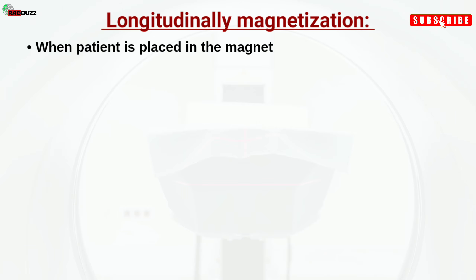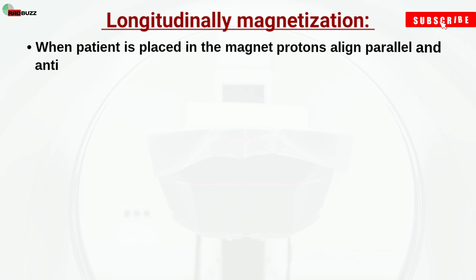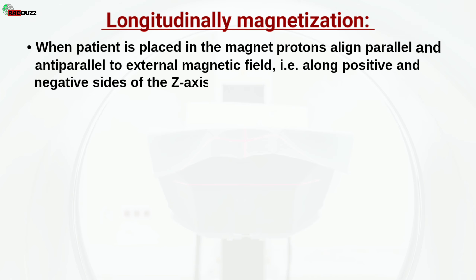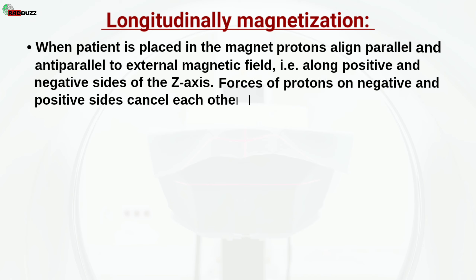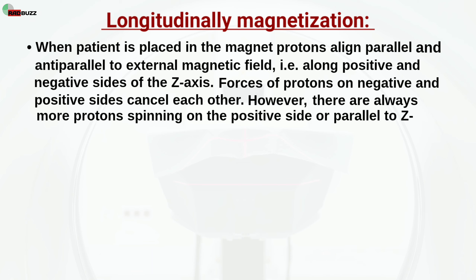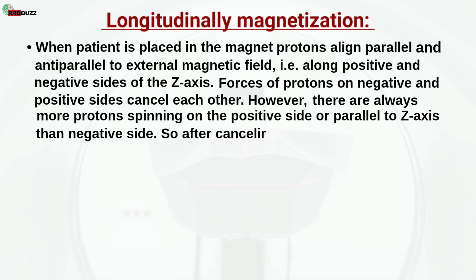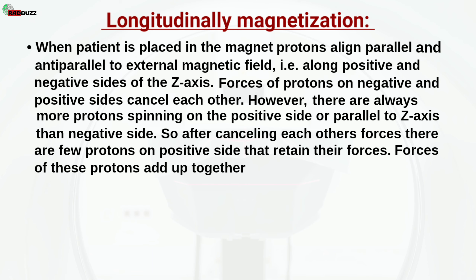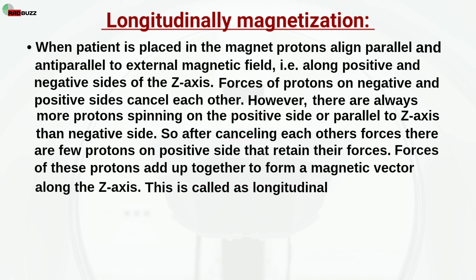Longitudinal magnetization: When the patient is placed in the magnet, protons align parallel and anti-parallel to the external magnetic field — that is, along the positive and negative sides of the z-axis. Forces of protons on negative and positive sides cancel each other. However, there are always more protons spinning on the positive side, parallel to the z-axis, than on the negative side. So after cancelling each other's forces, there are a few protons on the positive side that retain their forces. The forces of these protons add up together to form a magnetic vector along the z-axis. This is called longitudinal magnetization.